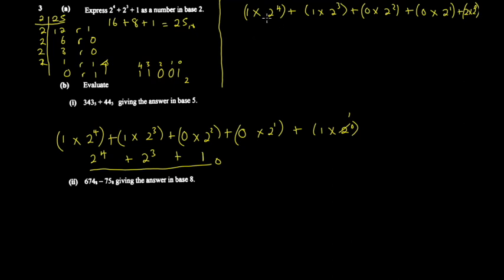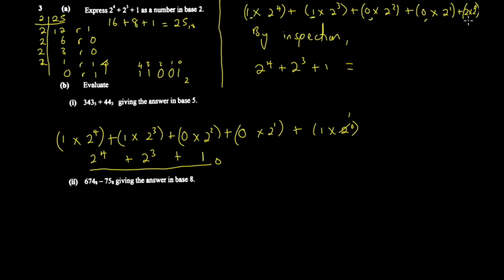After doing this, you just collect the coefficients by inspection. So 2⁴ + 2³ + 1 gives you coefficients 1, 1, 0, 0, 1 — reading them in order — giving 11001 base 2. You can do this in maybe 10 to 30 seconds, whereas the longer method takes extra steps.